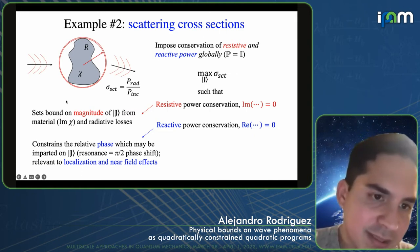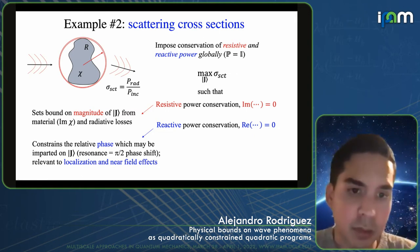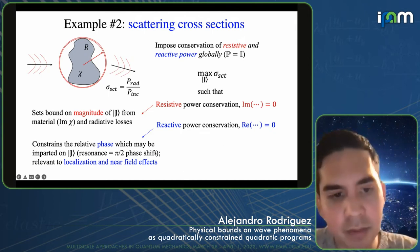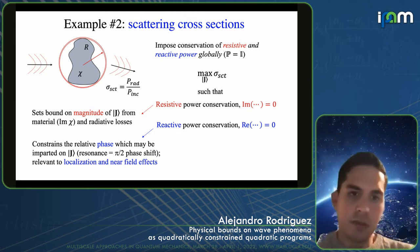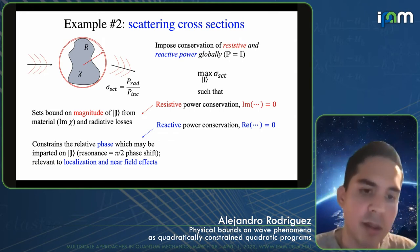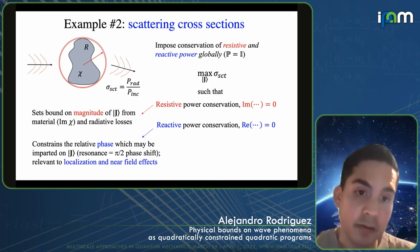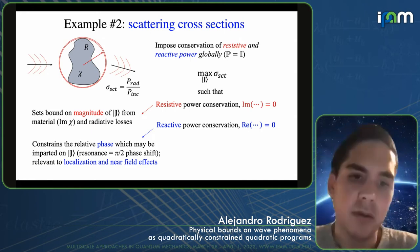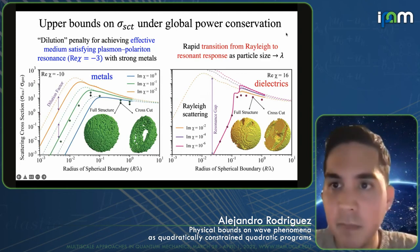Resistive power conservation sets a bound on the magnitude of the maximum electromagnetic response or bound polarization you can get in the system. Whereas reactive power conservation tells you something about the relative phase which a structure can impart on the wave — it's very relevant and critical to localization, near-field effects, and the ability to get resonances in the system.